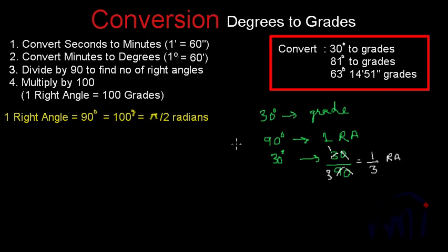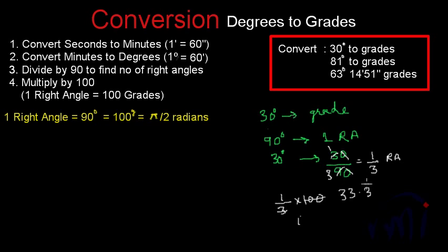We know one right angle equals 100 grades, so 1/3 right angles equals 1/3 multiplied by 100 grades, which equals 33.3̄ grades. This is the conversion of degrees to grades where we don't have any minutes or seconds, so we need not bother about them.